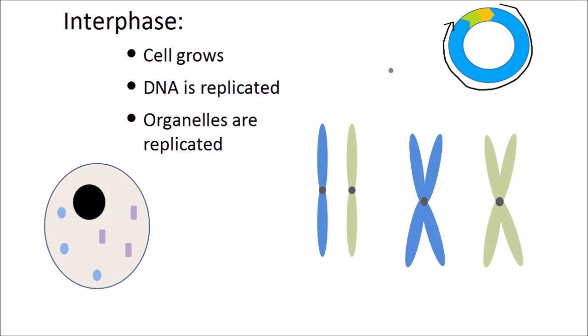And before a cell can split, the cell, which we call the parent cell, has to grow and produce more organelles. So things like ribosomes and things like mitochondria. It also has to make a copy of its DNA. So the 46 chromosomes in the nucleus are copied so that the cell has two copies of each chromosome.